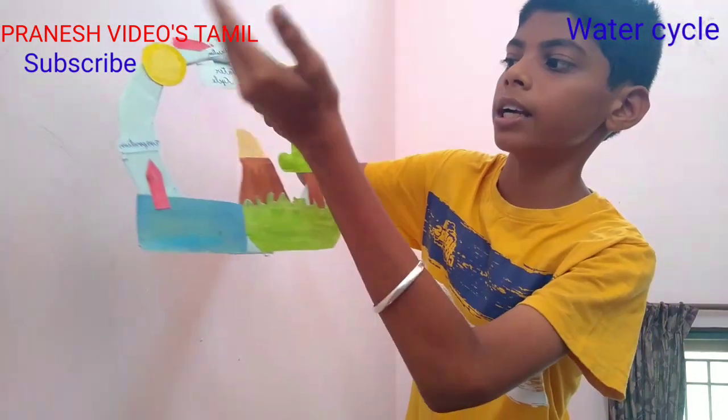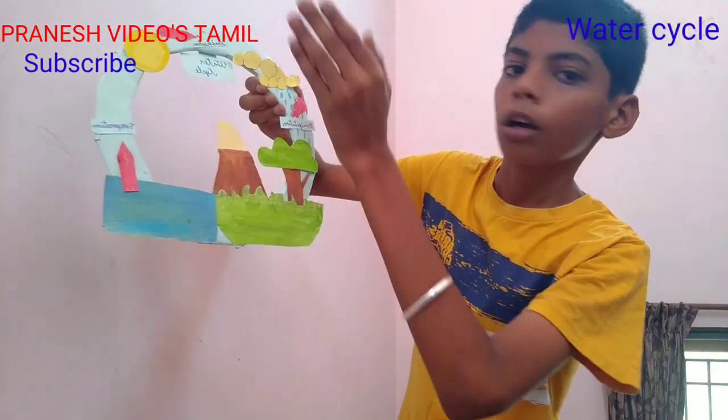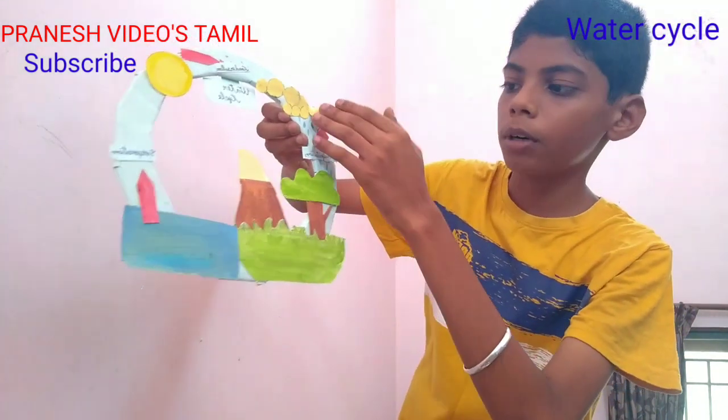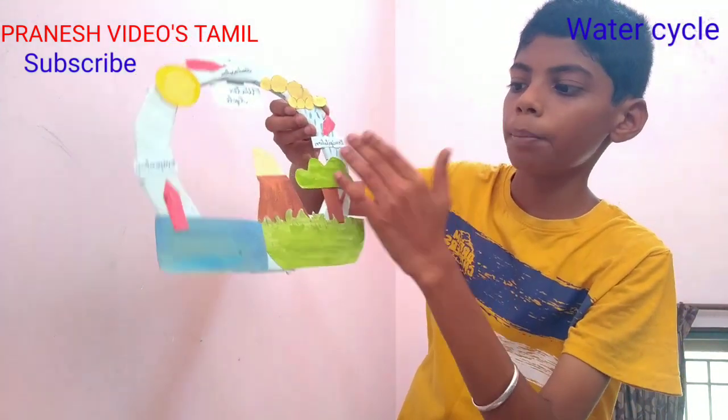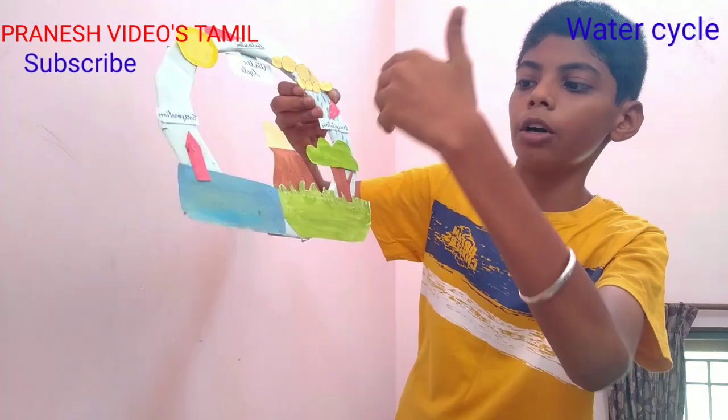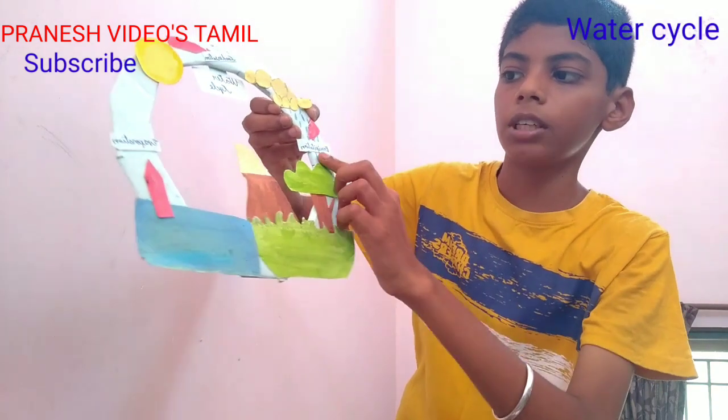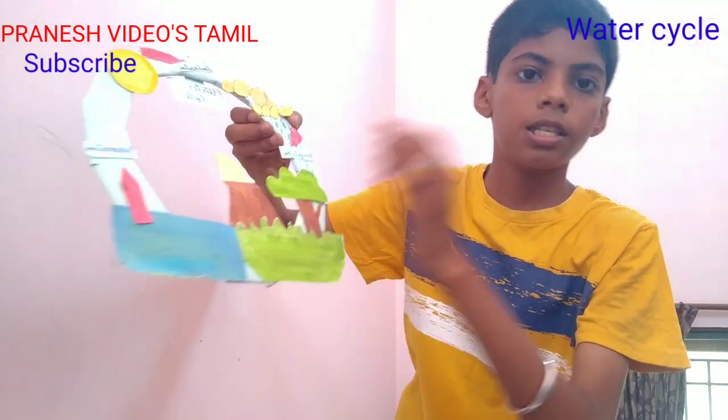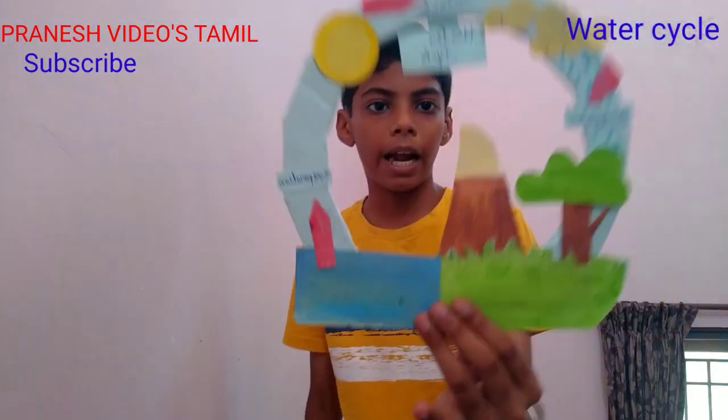The water is in the clouds. This is the precipitation. This is the water cycle — this is a simple activity.